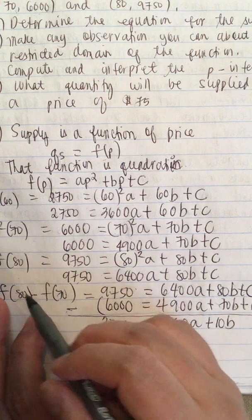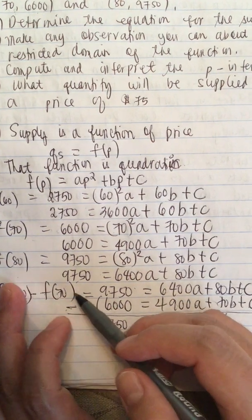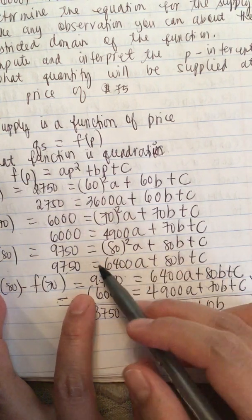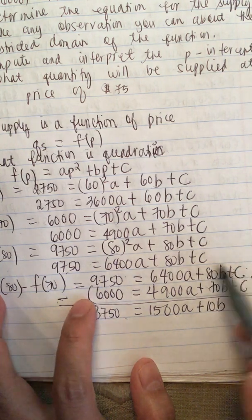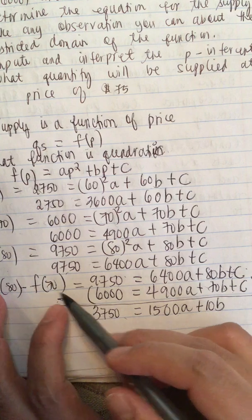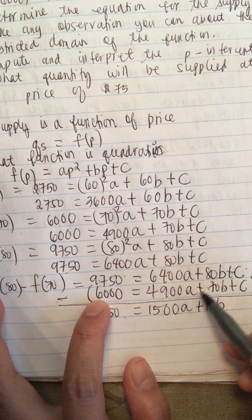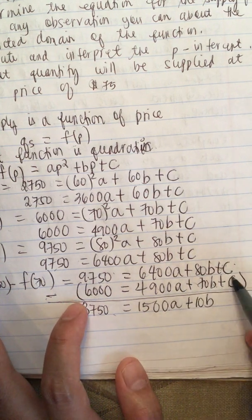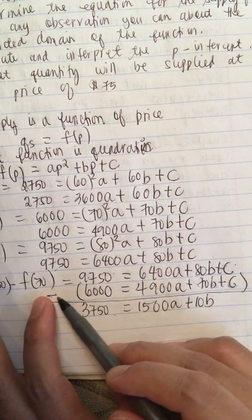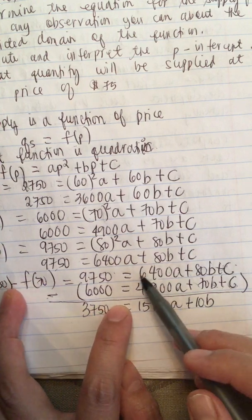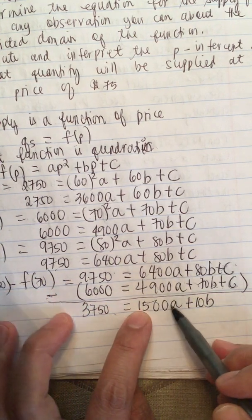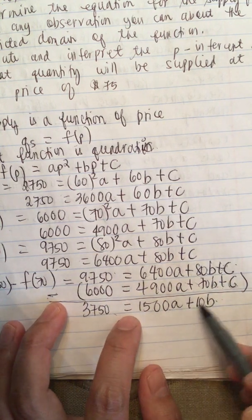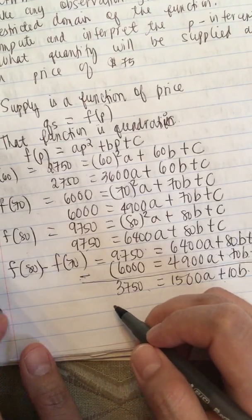We first subtract f of 70 from f of 80 to eliminate one unknown. So 9750 minus 6000 equals 3750, and 6400a minus 4900a equals 1500a, and 80b minus 70b equals 10b, and c minus c equals zero. So we are left with 3750 equals 1500a plus 10b.